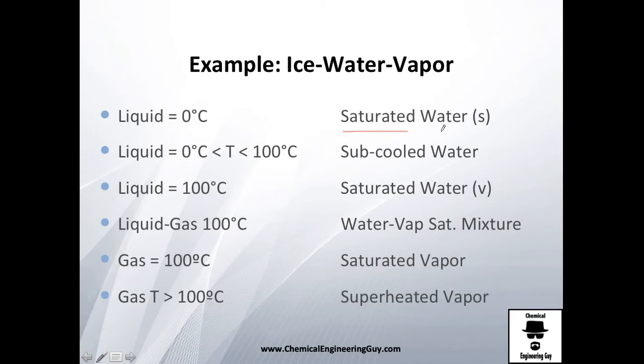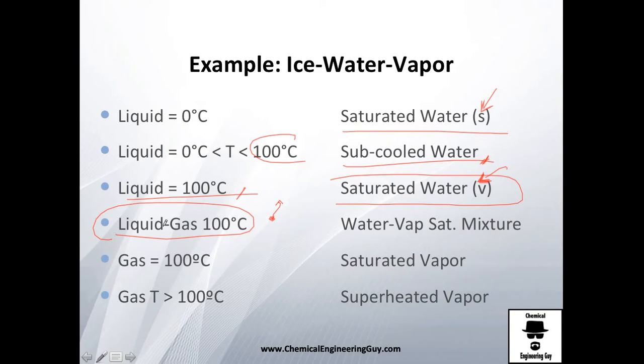Then from the saturated water we're going to heat it a little bit more before achieving 100 Celsius. That's what we call subcooled water. Then we achieve 100 Celsius, which will be called saturated water. I make the difference here because this is saturated with the vapor line and this one is saturated with the solid line. Then eventually you're going to see a bubble which evaporates and you will start having a liquid gas or water vapor saturated mixture until you achieve only gas. You're going to evaporate all the liquid, you get 100 Celsius of gas. That's what we call saturated vapor.